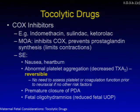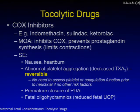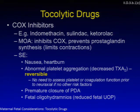COX inhibitors — including indomethacin, sulindac, and ketorolac — prevent prostaglandin synthesis and thereby limit contractions. Side effects include nausea, heartburn, and reversible abnormal platelet aggregation by decreasing thromboxane A2, though there is no need to assess platelet or coagulation function prior to neuraxial anesthesia in women taking these without other risk factors. Importantly, COX inhibitors can cause premature closure of the PDA and fetal oligohydramnios, potentially requiring increased fetal monitoring during use.